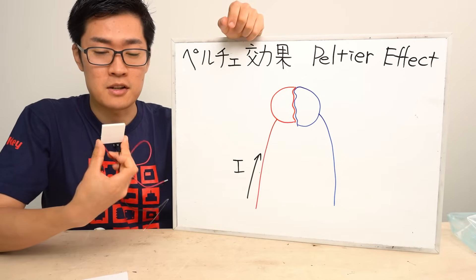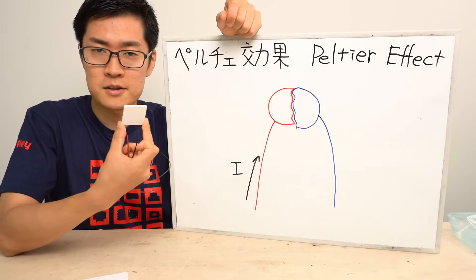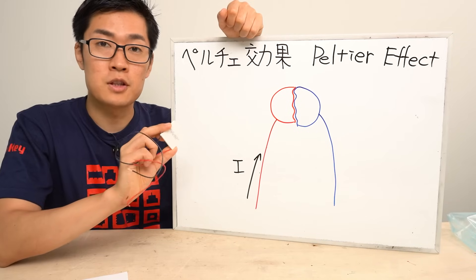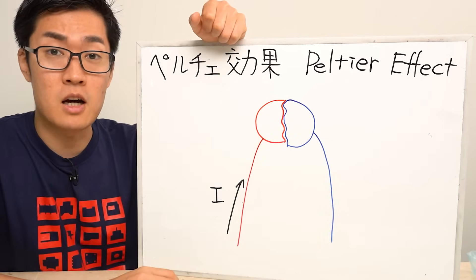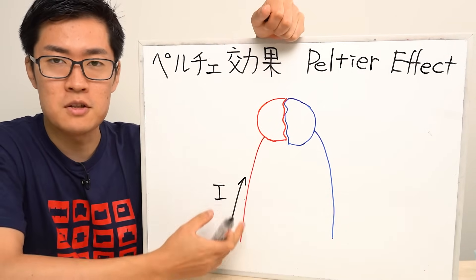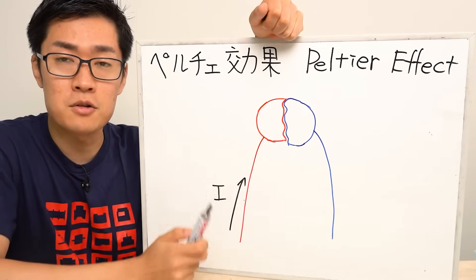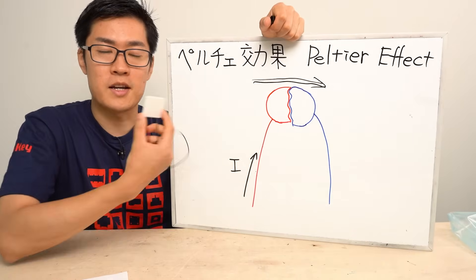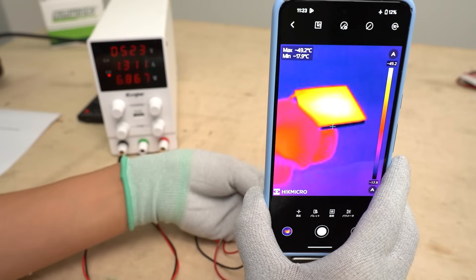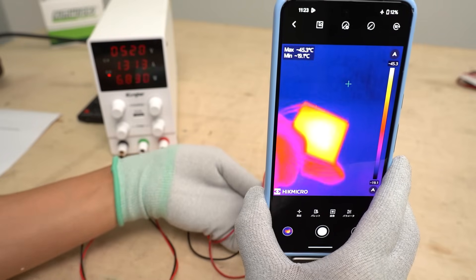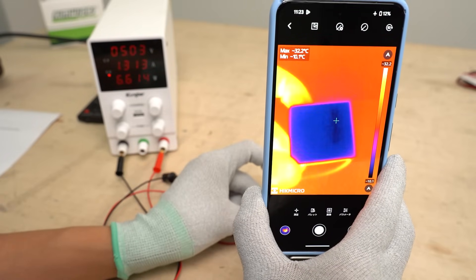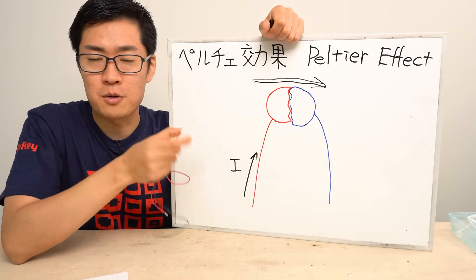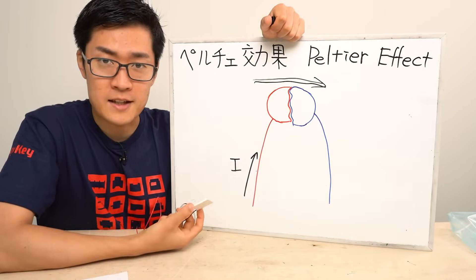As we have seen so far, when a current flows through a Peltier device, one side gets hot and the other side gets cold. This behavior utilizes the Peltier effect. When an electric current flows through a junction of two different types of metals, heat transfers from one metal to the other — that's called the Peltier effect. In the experiment earlier, one side getting hot and the other getting cold was actually a transfer of heat. In other words, a Peltier device is an electronic device that creates a temperature difference when a current is applied.